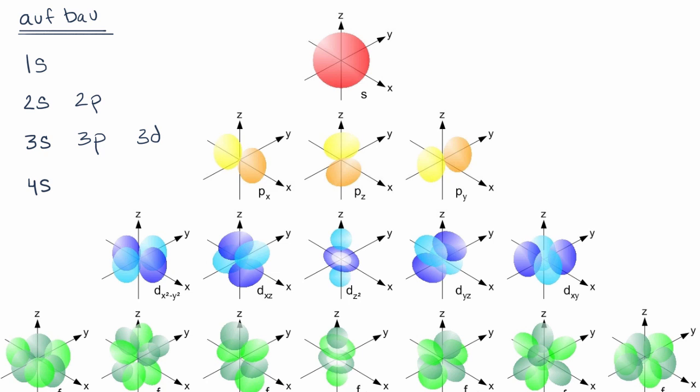And so, to help us remember this, you sometimes see diagrams like this, where you do 1s, then you go to 2s, then you go from 2p to 3s, then you go from 3p to 4s, and if we kept going, then you go to 3d.